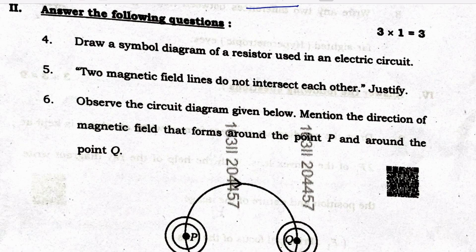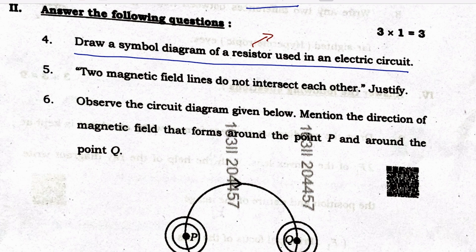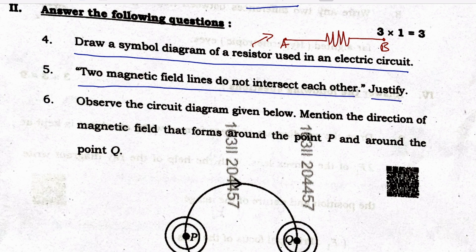Answer the following questions — three questions. First: draw the symbol diagram of a resistor used in an electric circuit. As you know, the resistor diagram is this [A — B]. Next question: two magnetic field lines do not intersect each other — justify. The answer is: if they did, it would mean that at the point of intersection the compass needle would point towards two directions, which is not possible.